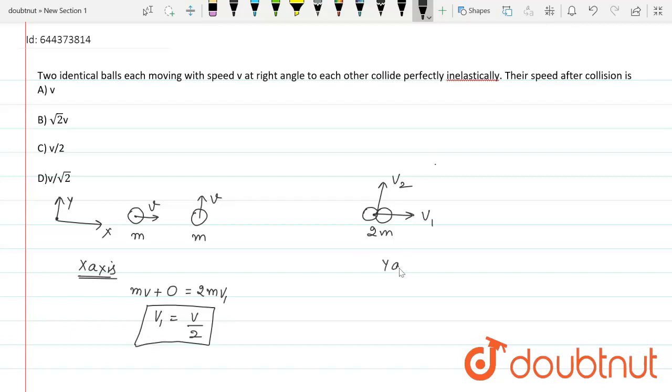Along y-axis, I can write the similar equation of momentum conservation as there is no external force acting on the system. This can be written as M into V plus 0, as the second object has velocity V in the upward direction and the first object has no velocity along y-axis. This is equal to 2 times M into V2. Therefore, V2 turns out to be V by 2.